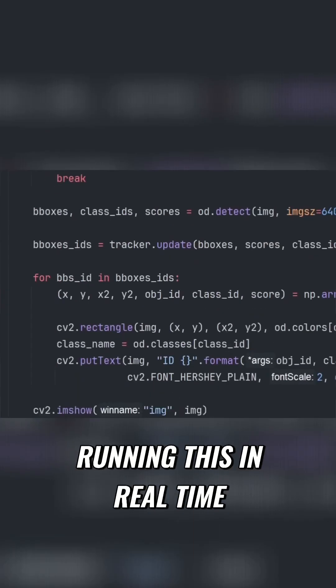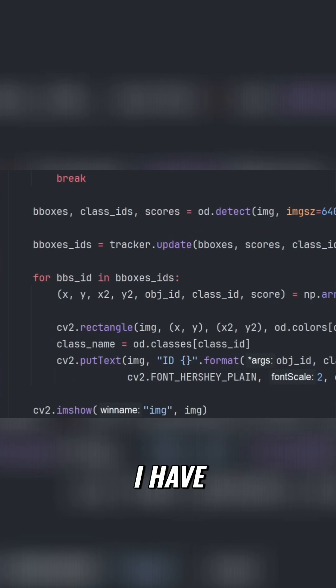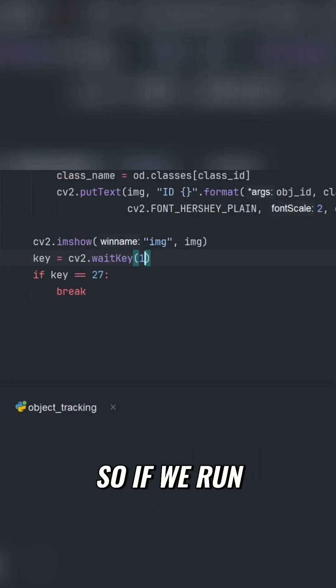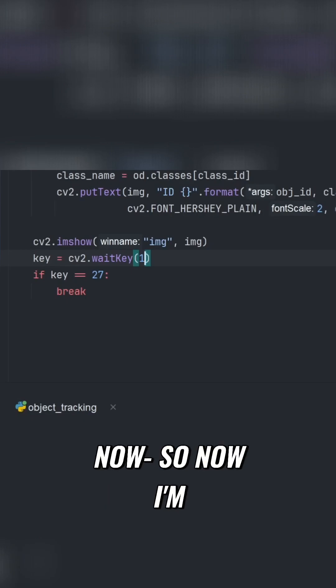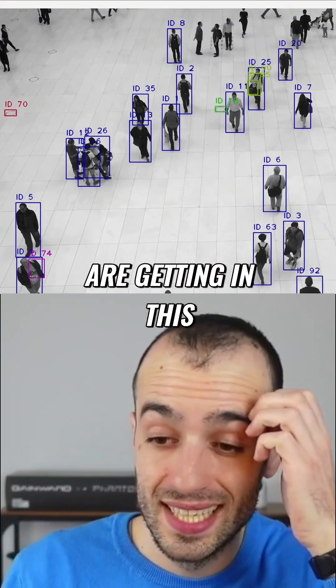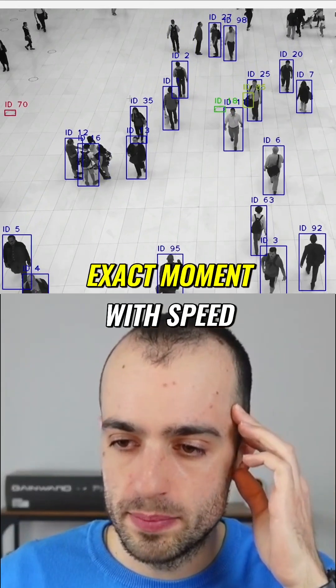Now I will show you running this in real time, how with the graphic card I have, it performs in comparison with the other ones. So if we run just StrongSort right now, so now I'm running StrongSort and that's the maximum that we are getting in this exact moment with speed.